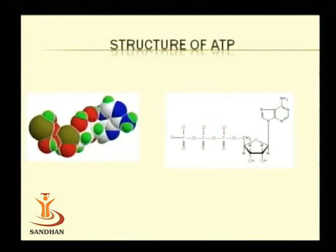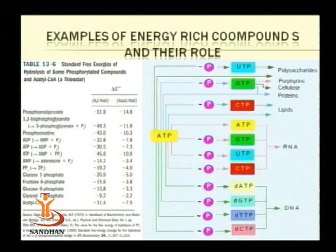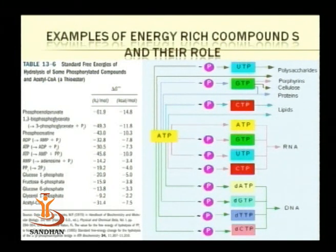In the structure of ATP, two phosphoanhydride bonds are highlighted. Other energy-rich compounds apart from ATP include GTP, UTP, CTP, and dATP. ATP can be used as a general source of energy, whereas UTP is used for biosynthesis of polysaccharides, GTP for biosynthesis of proteins as well as porphyrins, and CTP for biosynthesis of lipids and phospholipids.